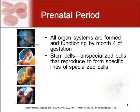All organ systems are formed and functioning by about month four of gestation. Stem cells are the unspecialized cells that reproduce from that original ovum to form the specific cells that develop into tissues and organs.